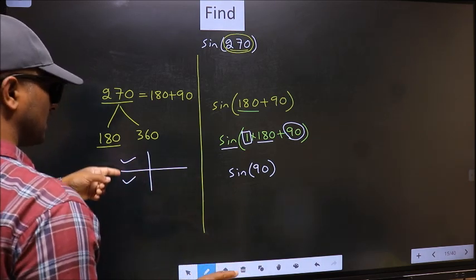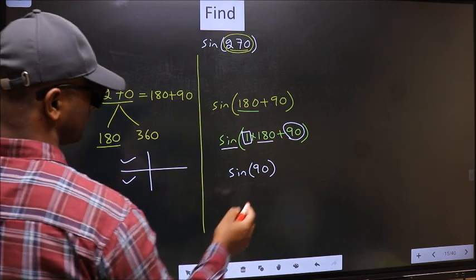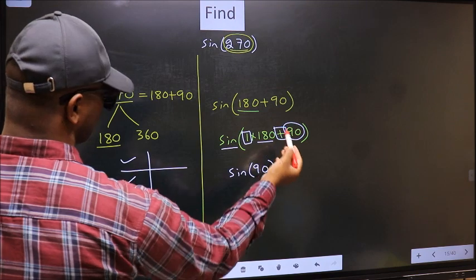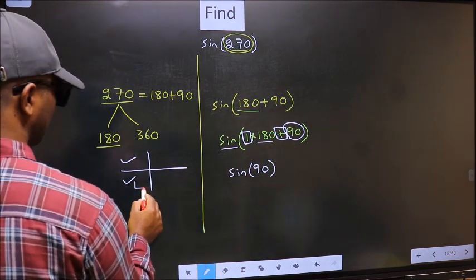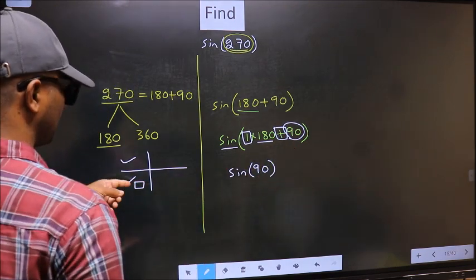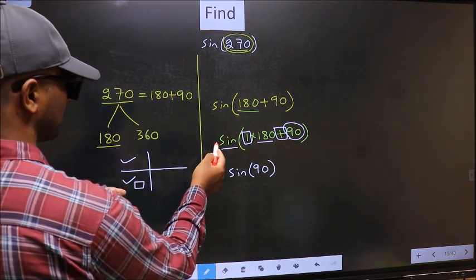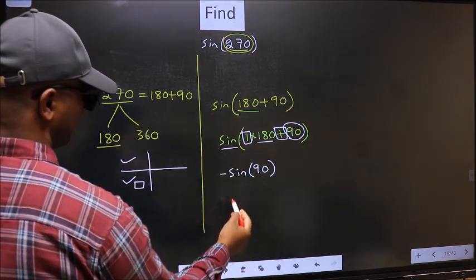So now to select the quadrant, we should look at this symbol. Here we have plus. That means the angle lies in the third quadrant. And in the third quadrant, sine is negative. So we should put negative.